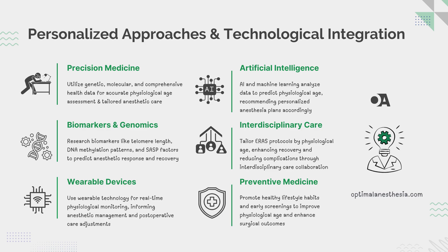Let's not forget the importance of preventive medicine. Promoting lifestyle changes that improve physiological age — such as regular exercise, healthy eating, and stress management — can reduce the need for complex surgical and anesthetic interventions later in life. Early screening for conditions that affect physiological age, such as hypertension, diabetes, and obesity, allows for timely interventions that can improve overall health and surgical outcomes. Prevention is always better than cure.